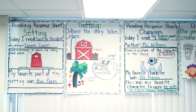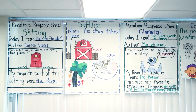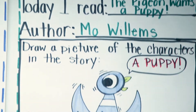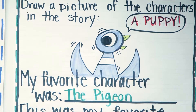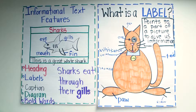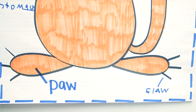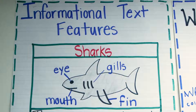Some visual strategies we use are anchor charts. We have anchor charts all around the classroom that the students help create — the students are adding to the pictures and adding to the words. They really use those when they're reading or when they're learning new skills. They look to those to help support their writing and to support their speaking.